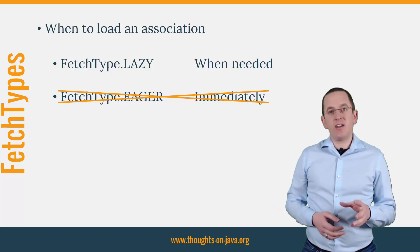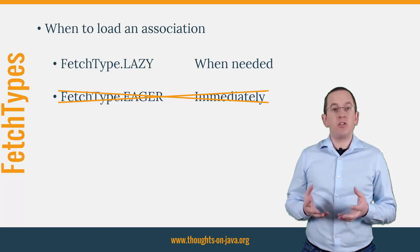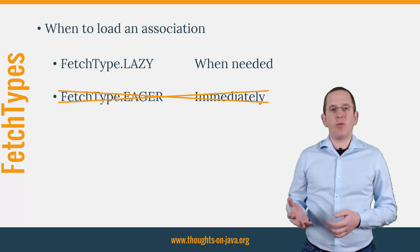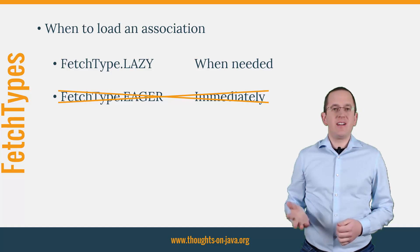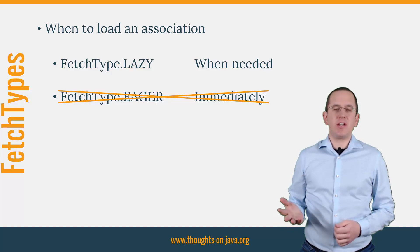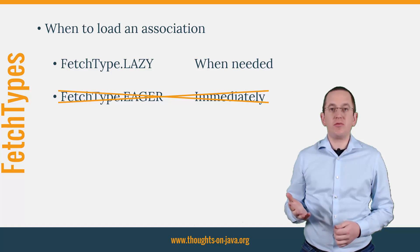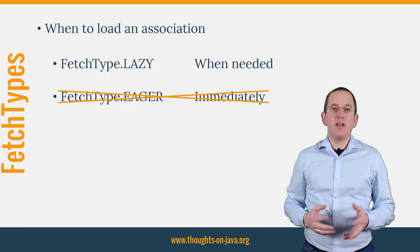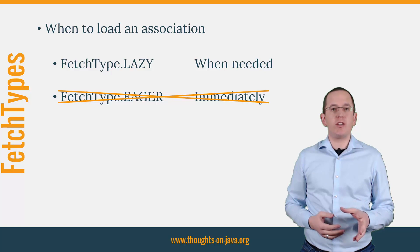Use fetch type lazy instead. It delays the initialization of the relationship until you use it in your business code. That avoids a lot of unnecessary queries and improves the performance of your application. Luckily, the JPA specification defines fetch type lazy as the default for all to-many associations, so you just have to make sure that you don't change it. But unfortunately, that's not the case for to-one relationships, and that gets us to mistake number 2.